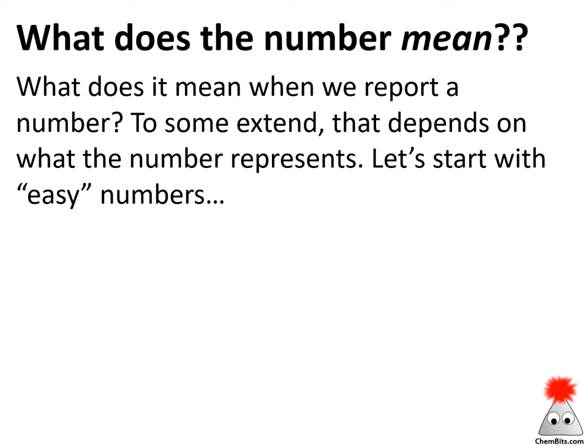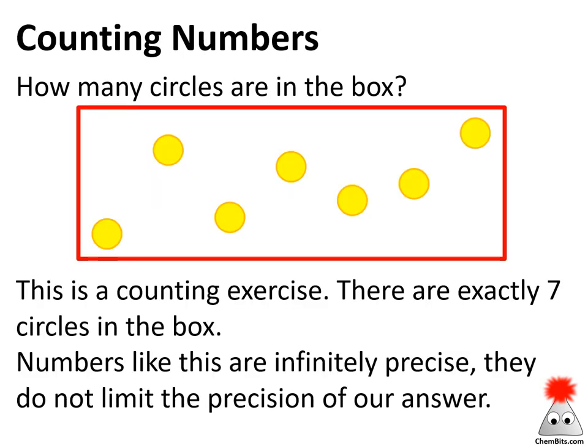So let's start by just talking about numbers in general. What does a number mean? To get us rolling, let's start with some of the more simple numbers. What about counting numbers? Here I've got a red box — how many circles are there in that box? This is a counting number. We've got seven circles in the box. That's an exact number because we've just counted it. These are individual items that we are counting, so seven is an exact number because it is a counting number.